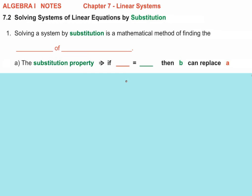Solving a system by substitution is a mathematical method. Now look, we could graph them. But we want a mathematical method of finding that, finding the what? What goes in the blanks? When you solve a system, what are you always looking for? The point of intersection. So it's a mathematical way of finding the point of intersection. That's what it's all about. Don't lose sight of point of intersection. It's all about the point of intersection. Alright.